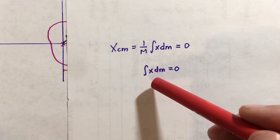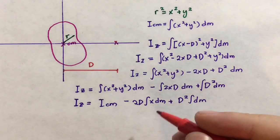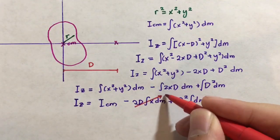As noted earlier, the integral of xdm is equal to zero. So because that term comes up here again, we can see that this term entirely cancels out to zero.